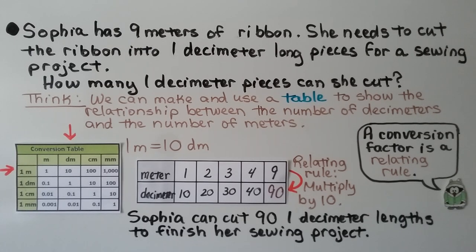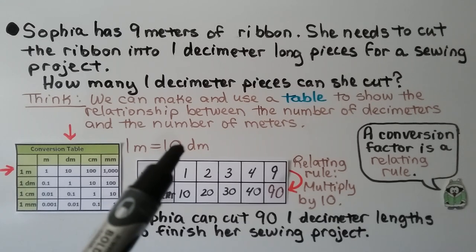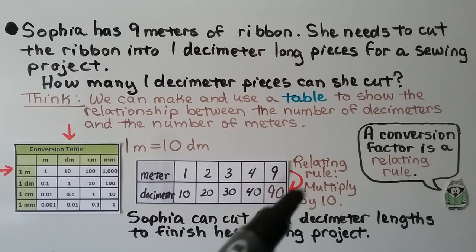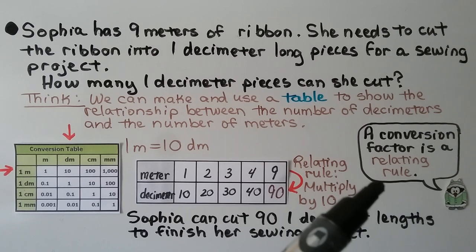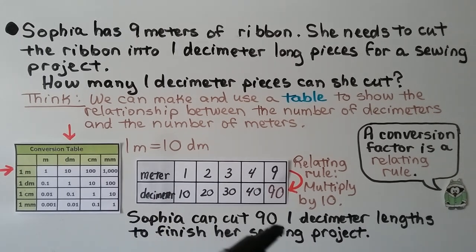Sophia has nine meters of ribbon. She needs to cut the ribbon into one-decimeter long pieces for a sewing project. How many one-decimeter pieces can she cut? We can make a table to show the relationship between decimeters and meters. One meter is equal to ten decimeters, so the relating rule — the conversion factor — is multiply by ten. Sophia can cut nine times ten, which is ninety one-decimeter lengths.